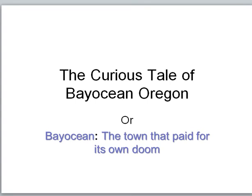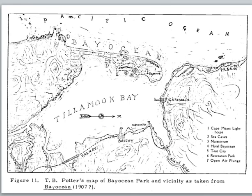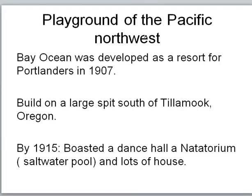Which brings us to my favorite story of coastal processes — the curious tale of Bay Ocean, Oregon. One website described it as 'the town that paid for its own doom.' Bay Ocean was a proposed resort town back in 1907 by a man named T.B. Potter. It was a spit of land out from Tillamook Bay along a very rugged highway — many times people actually had to use the coast as the highway, getting buggies across when the tide went out and back up on the highland when it came in.